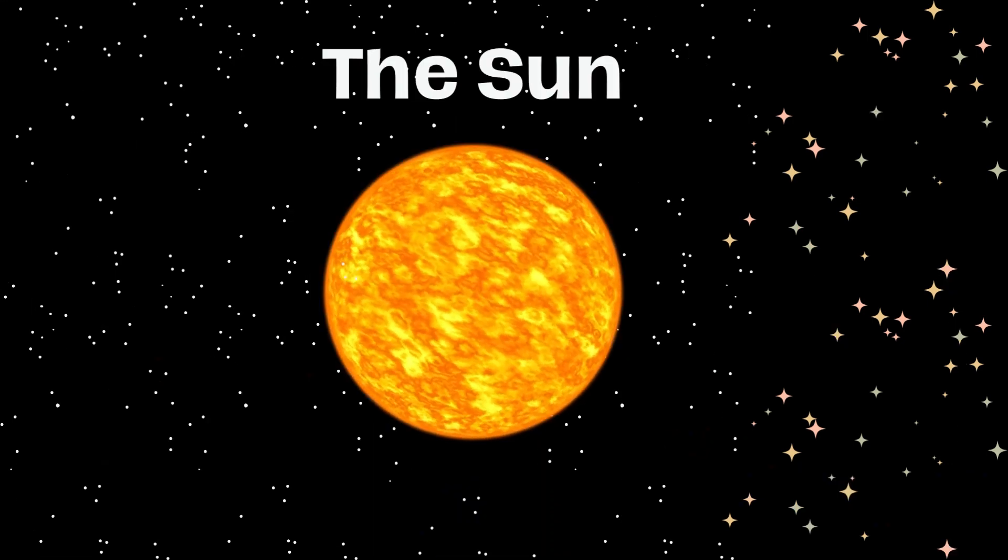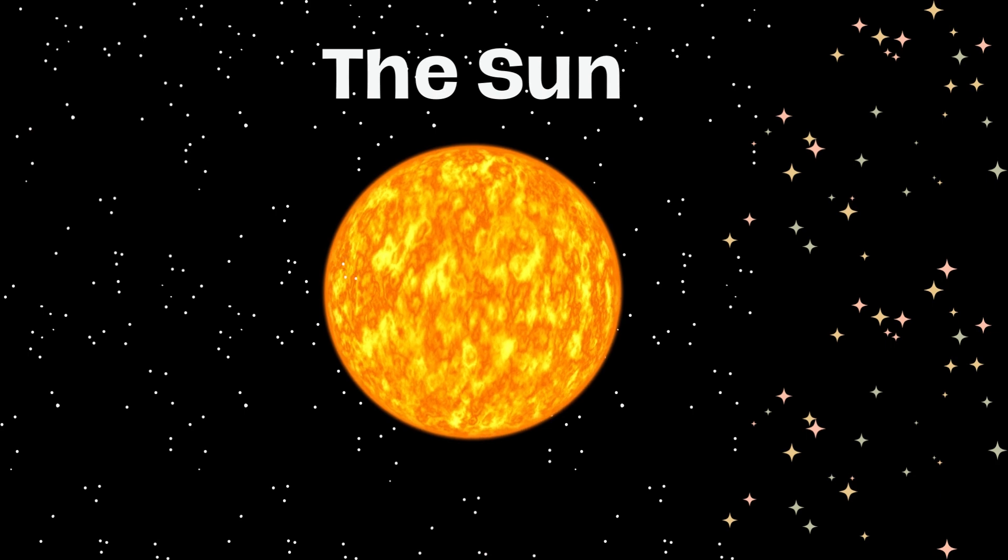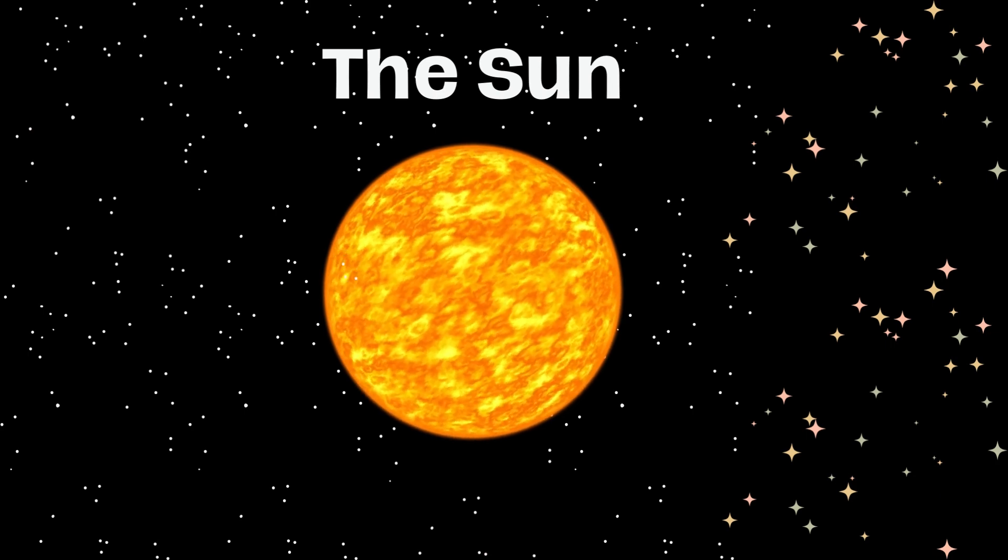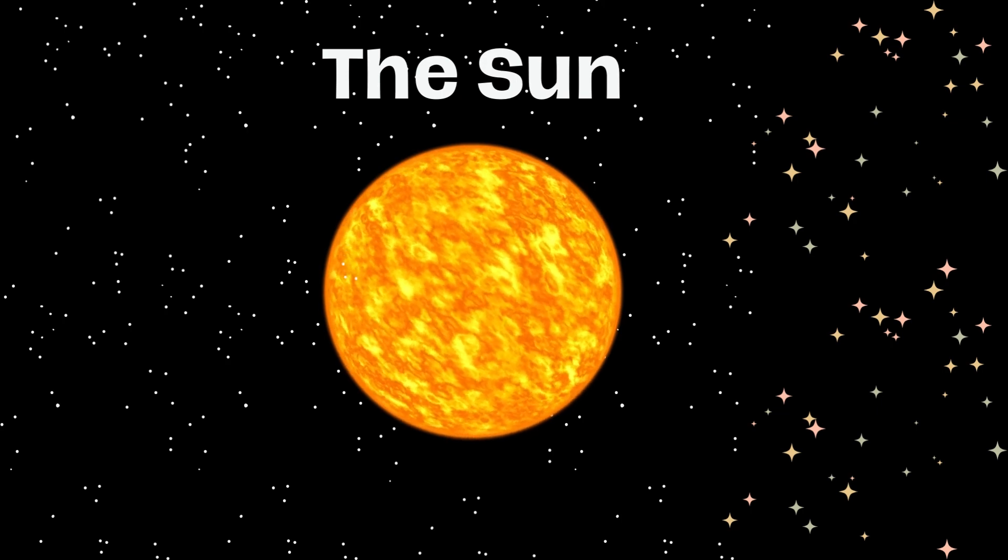The Sun is at the center of our solar system. It's a giant ball of hot, glowing gas. It gives us light and heat, and it's what makes life possible on Earth.